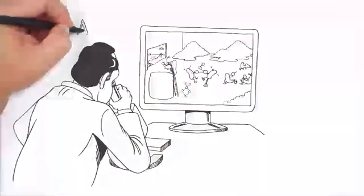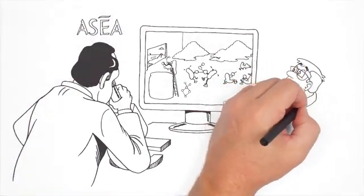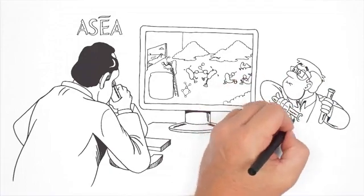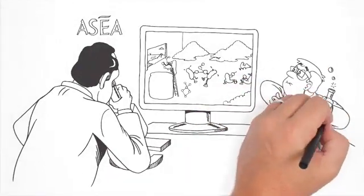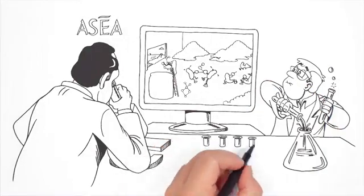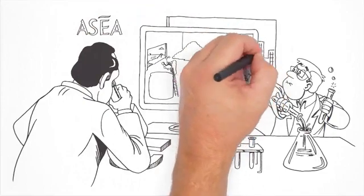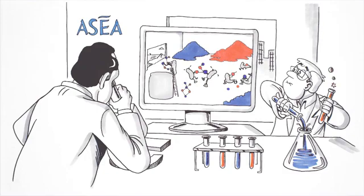So to make a redox signaling supplement outside of living cells, it makes sense to start with the same building blocks: salt and water. That's just what a company called ASEA does. We begin with a pure pristine saline solution, then using a highly protected and patented electrochemical process, we break apart the bonds that hold the sodium, chloride, hydrogen, and oxygen atoms together. These free-floating atoms are then recombined in new configurations and voila - redox signaling molecules.